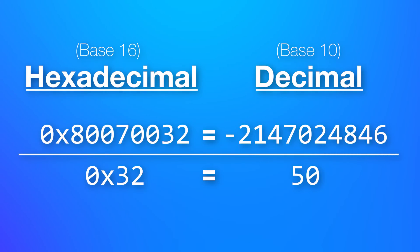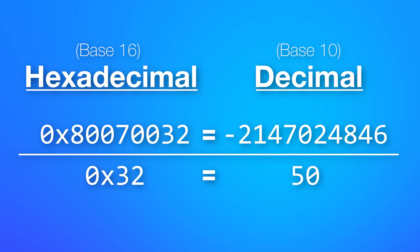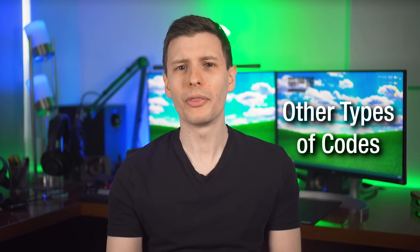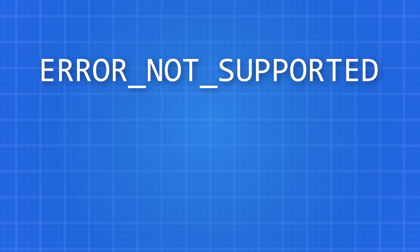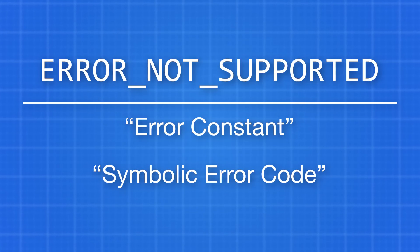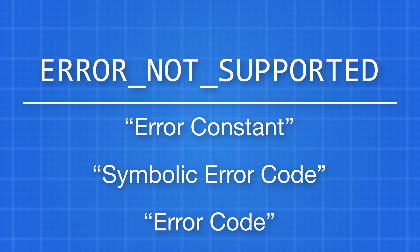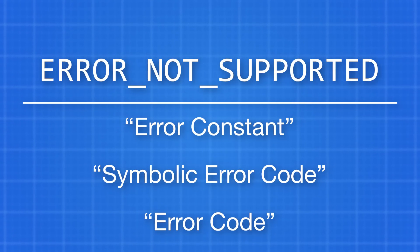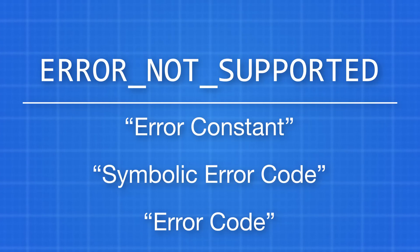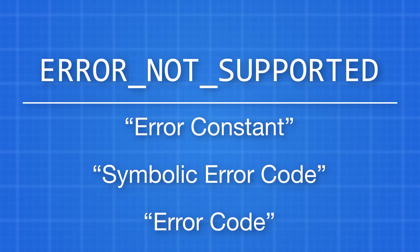Technically, the long and short codes are different error codes, but in the same context, they mean the same exact thing. And by the way, if you see a negative sign in front of a long decimal error code, that is part of the code, so don't ignore that. Now, one thing I did leave out is this kind of error code made of text with underscores. This has a few names — it might be called an error constant, a symbolic error code, or even just error code. It's basically just a more human-readable code that also corresponds to various errors, just like the number error codes do.